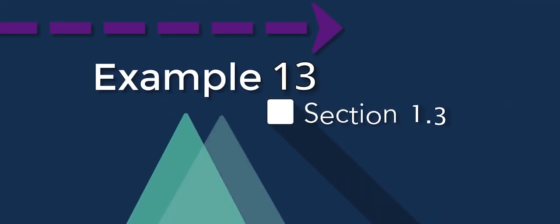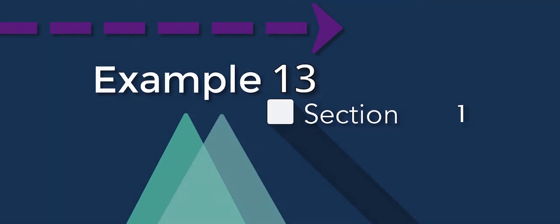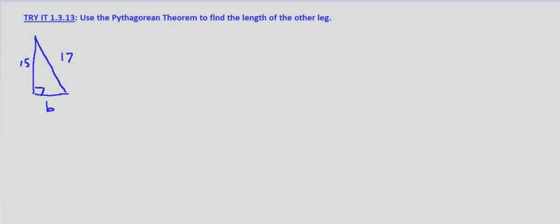In this problem, we're given a right triangle with one leg length of 15 units, the hypotenuse length of 17 units, and we're asked to find the length of the other leg.